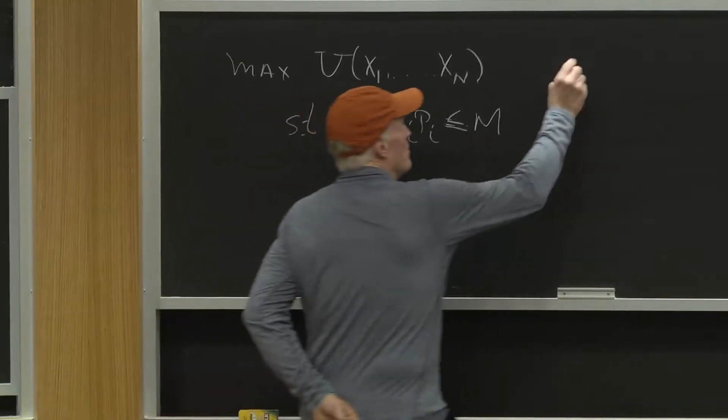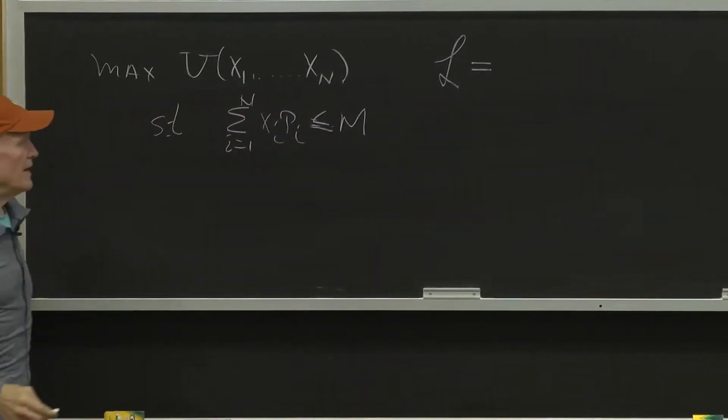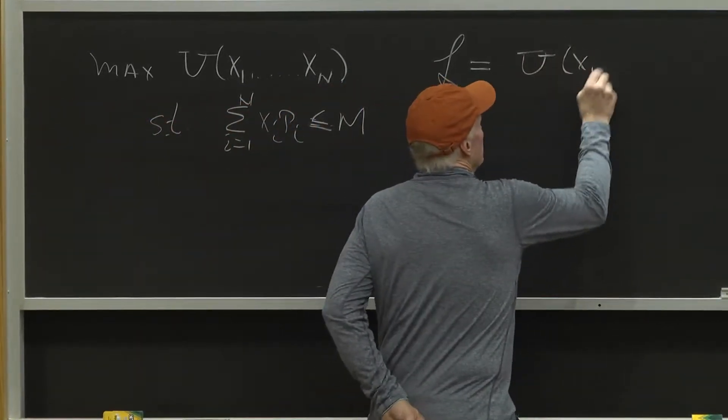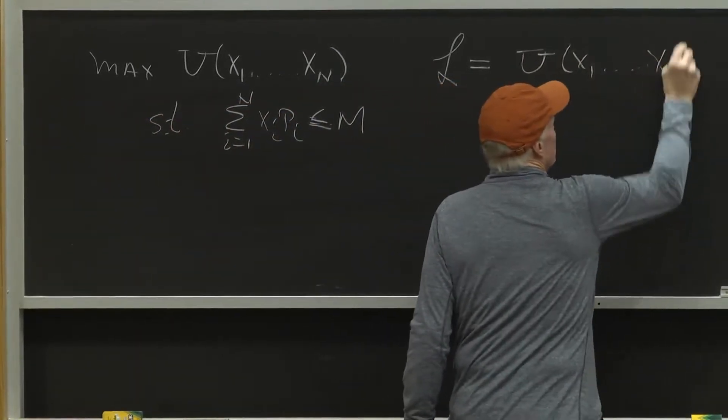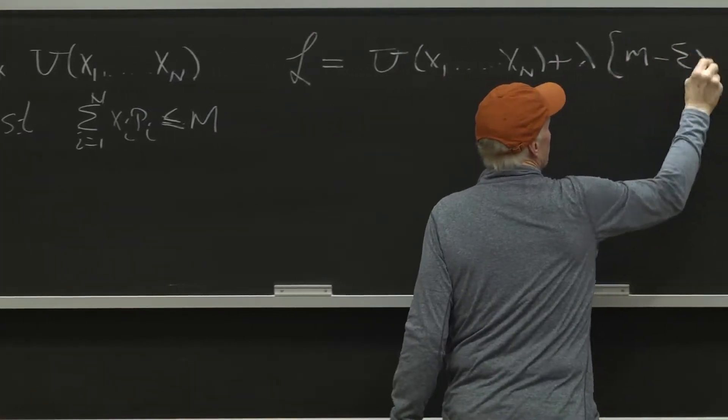We set up the Lagrangian for this, which is a simple technique for constrained optimization. That was just u(x1,...,xn) plus lambda times m minus the sum of xi pi.